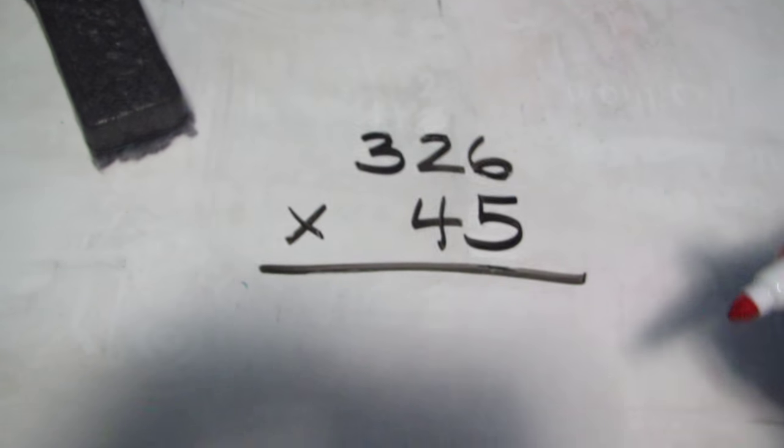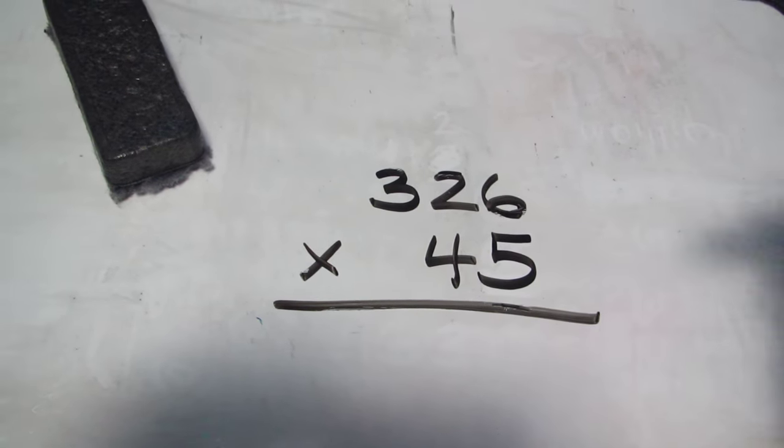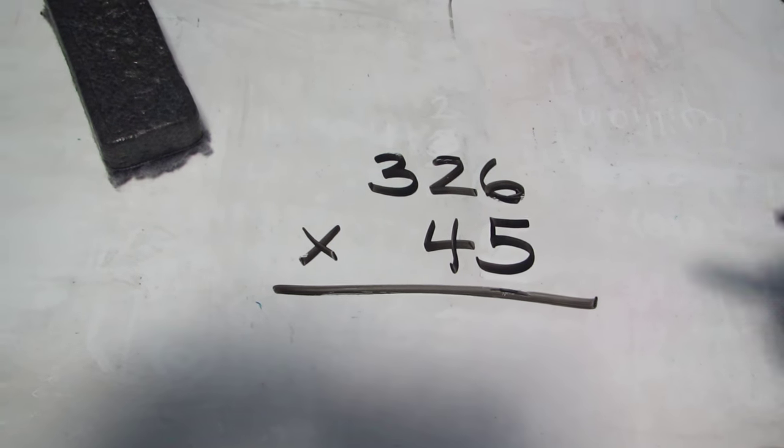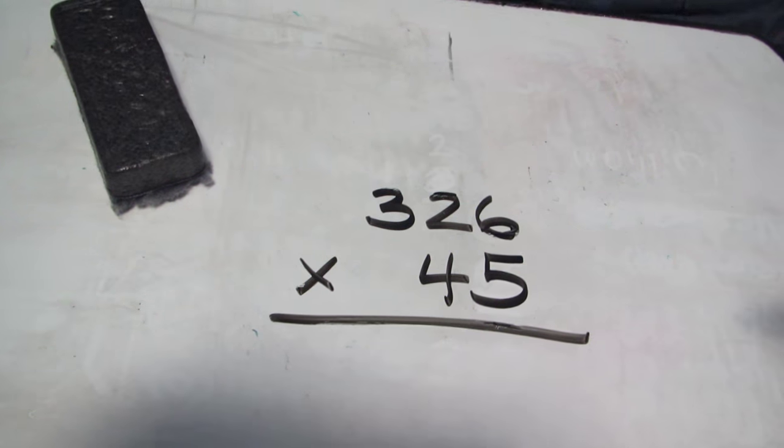Hi guys, here's a video on how to multiply a three-digit number times a two-digit number. In this case we're going to be doing 326 times 45.